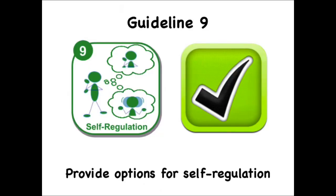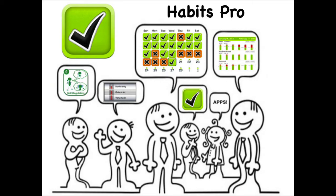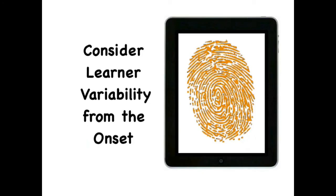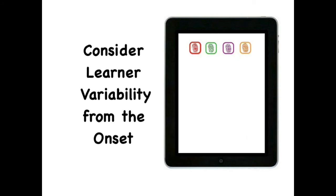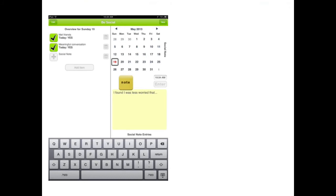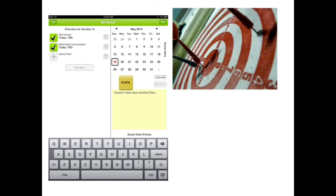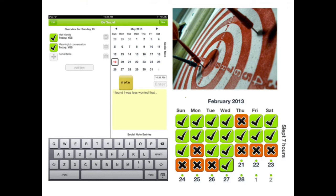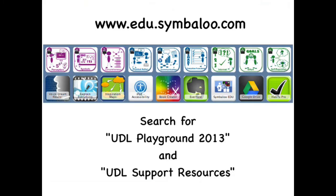In this video, we have explored how Habits Pro effectively supports options for self-regulation. As you design your units and lessons, consider student variability from the onset. View each app through the lens of UDL to ensure it is a rich tool that helps make learning accessible to all. The use of Habits Pro supports many UDL principles. The app not only lets students set goals and acts as a to-do list, but it also generates data as students record their behavior, allowing them to see and reflect on their growth and areas for improvement. To learn more about Habits Pro and other UDL apps and tools, please visit edu.symbaloo and explore our webmixes.